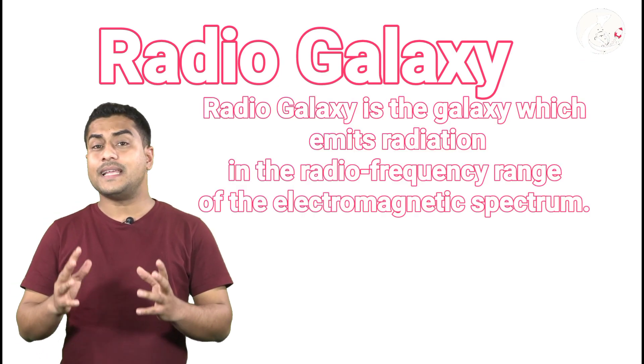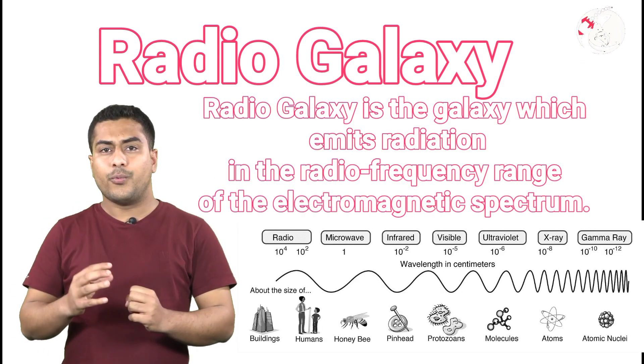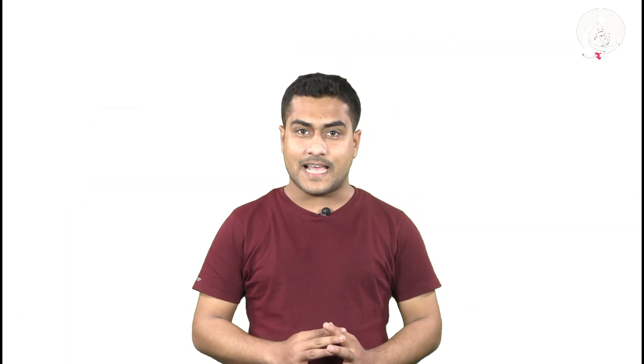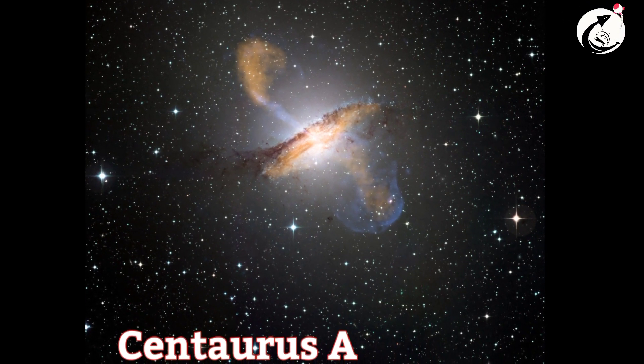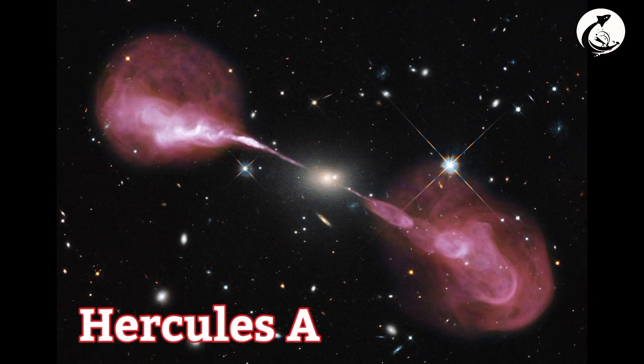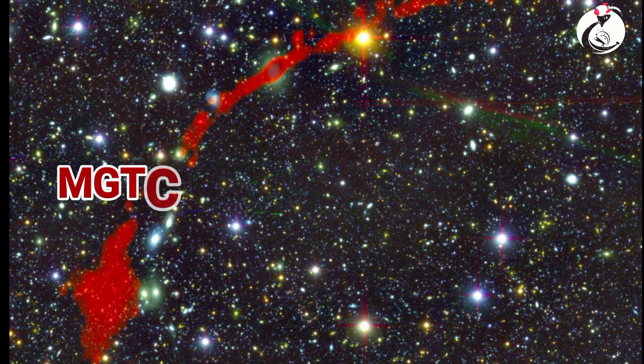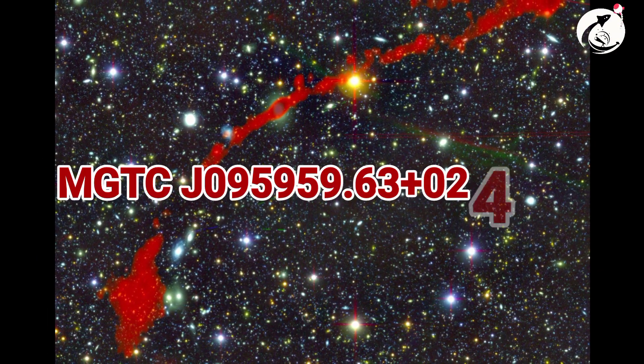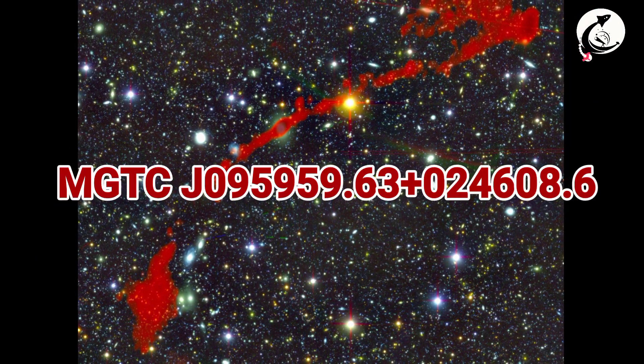Have you ever heard about radio galaxy? Radio galaxies are such type of galaxies which are more visible in the radio wavelength. Some of the examples of radio galaxies are: Centaurus A, Hydra A, Hercules A, and MGT CJ 095959.63+024608.6.